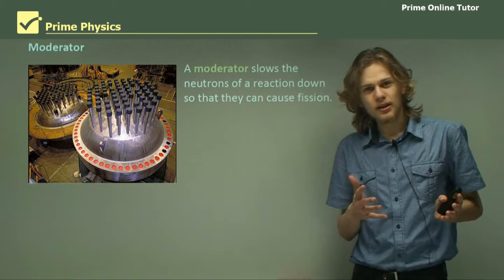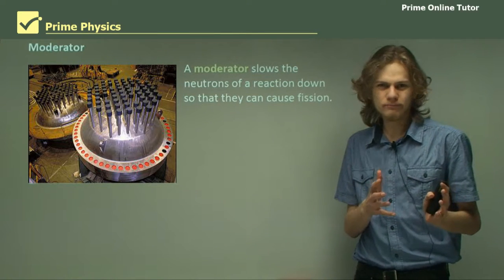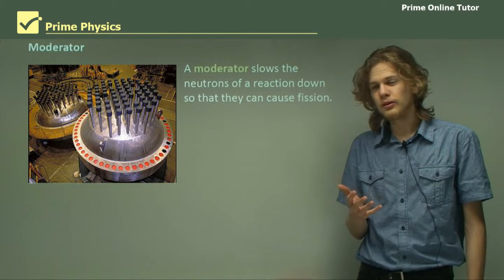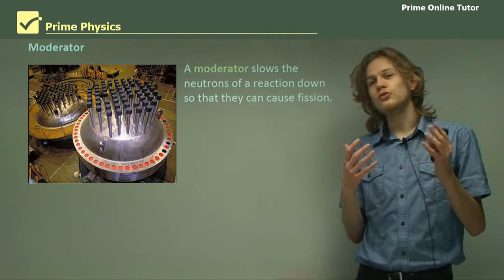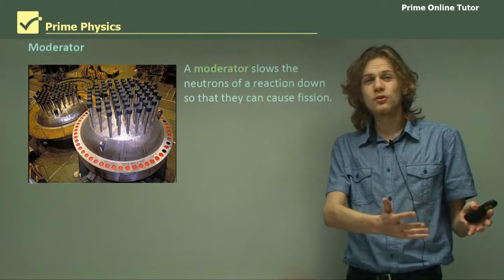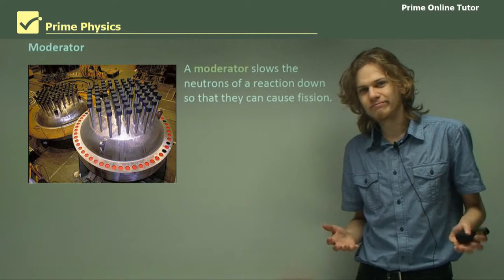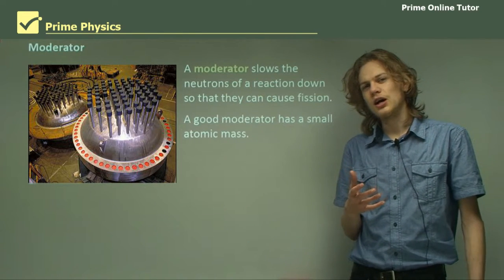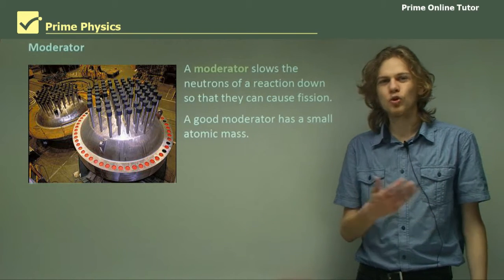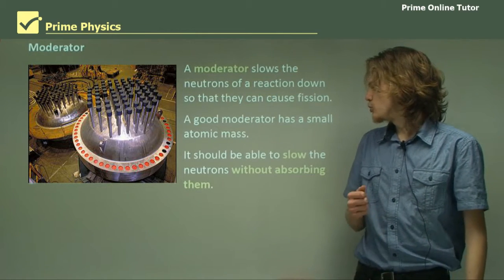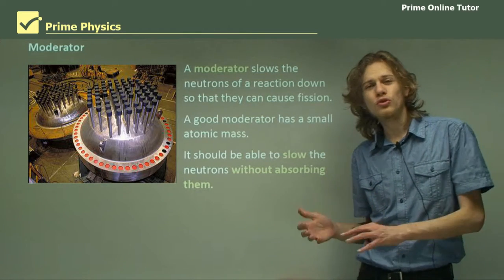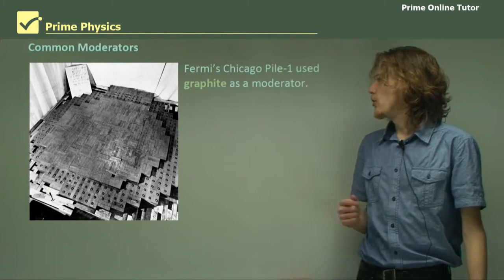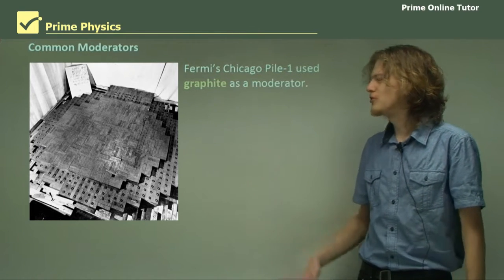A moderator is something that slows the neutrons down — Chicago Pile-1 used graphite for this. If the neutrons are moving too fast, they won't be absorbed by the uranium nuclei, and then the uranium nuclei can't undergo fission. A good moderator has a small atomic mass, because that means it won't become radioactive itself if it absorbs a neutron. It should also be able to slow the neutrons without absorbing them, so more neutrons can be absorbed by the actual fuel. Fermi's Chicago Pile-1 used graphite as a moderator.